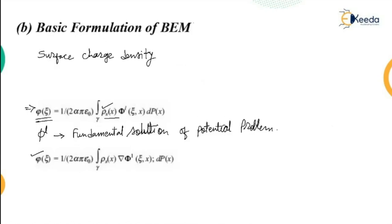So this is the last method, the boundary element method. In summary, the three numerical methods classified for understanding electric field computation are: first, the finite element method (FEM); second, the charge simulation method (CSM); and third, the surface charge simulation method or boundary element method (BEM). The formulations given here are direct formulae studied and considered for explanation purposes — no specific derivation is required. Hope you understood this lecture. Thank you so much.